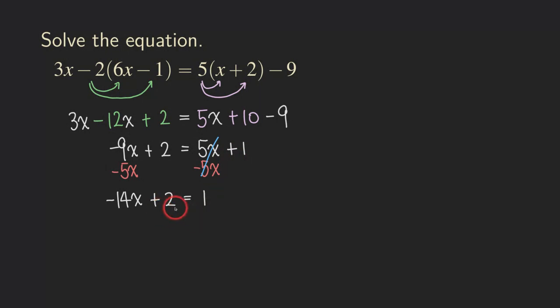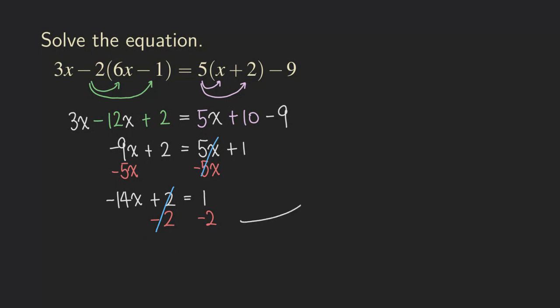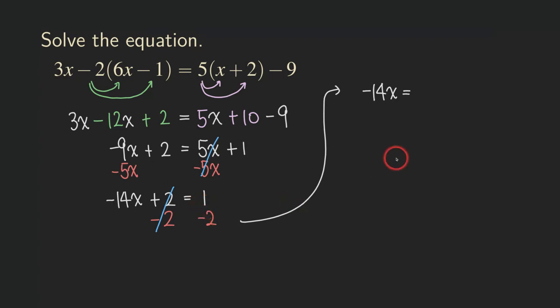The next step is to move the 2 to the right-hand side of the equation, because we want to isolate the x term. So to get rid of this 2, we are going to subtract 2 from both sides of the equation. One positive and one negative, so they get cancelled. On the right-hand side, we get 1 minus 2, which is negative 1. So now we have negative 14x equals negative 1.